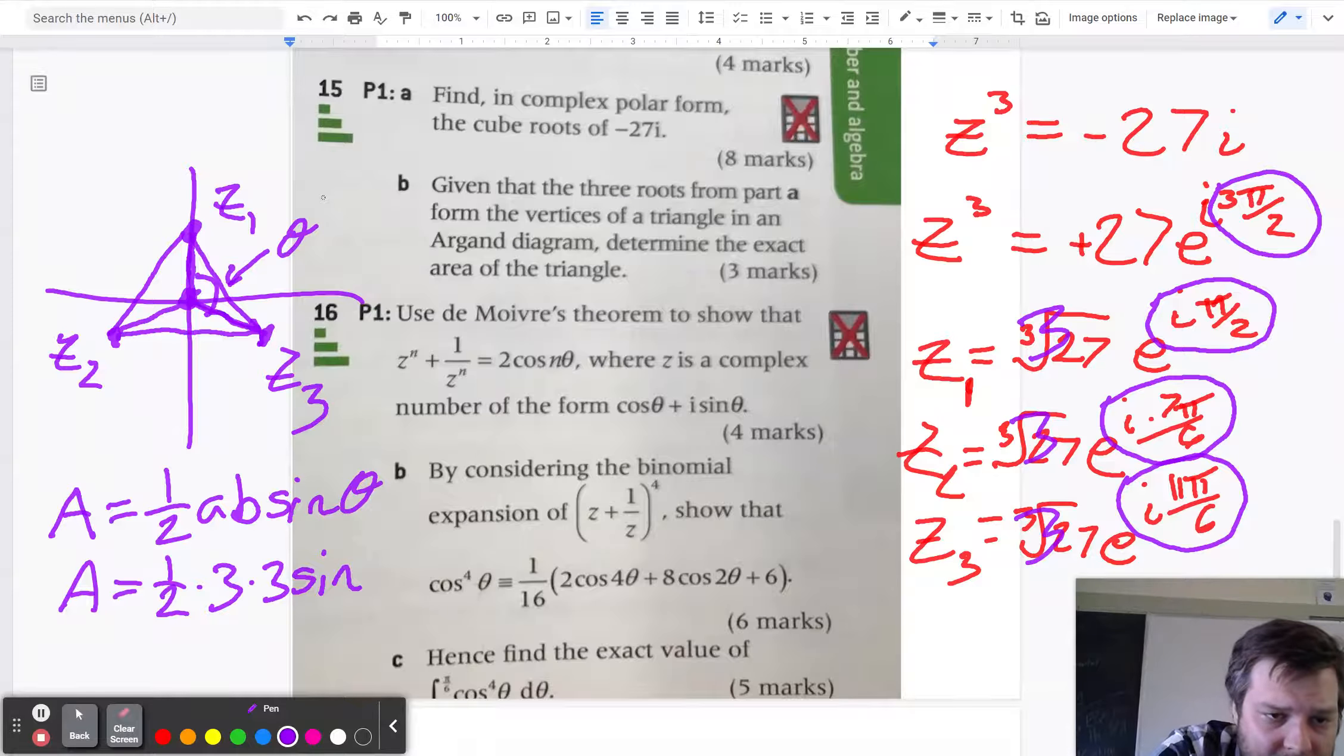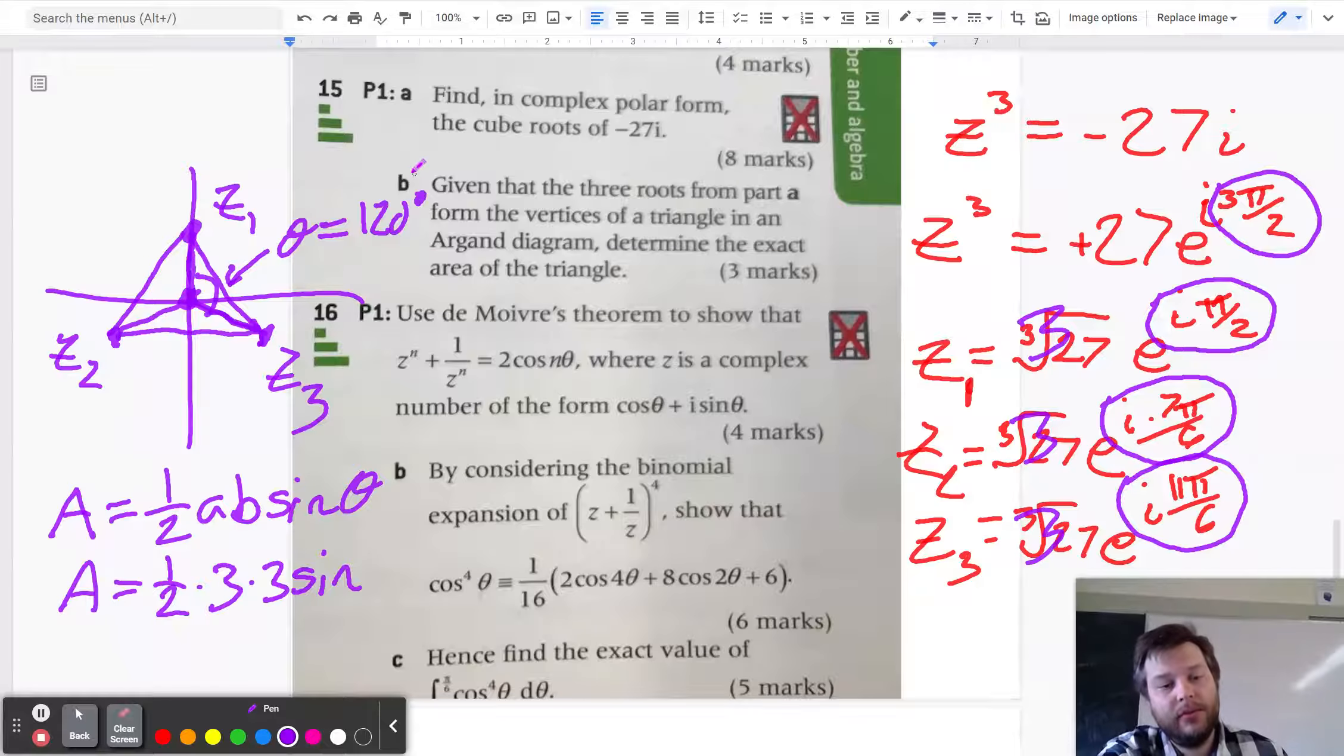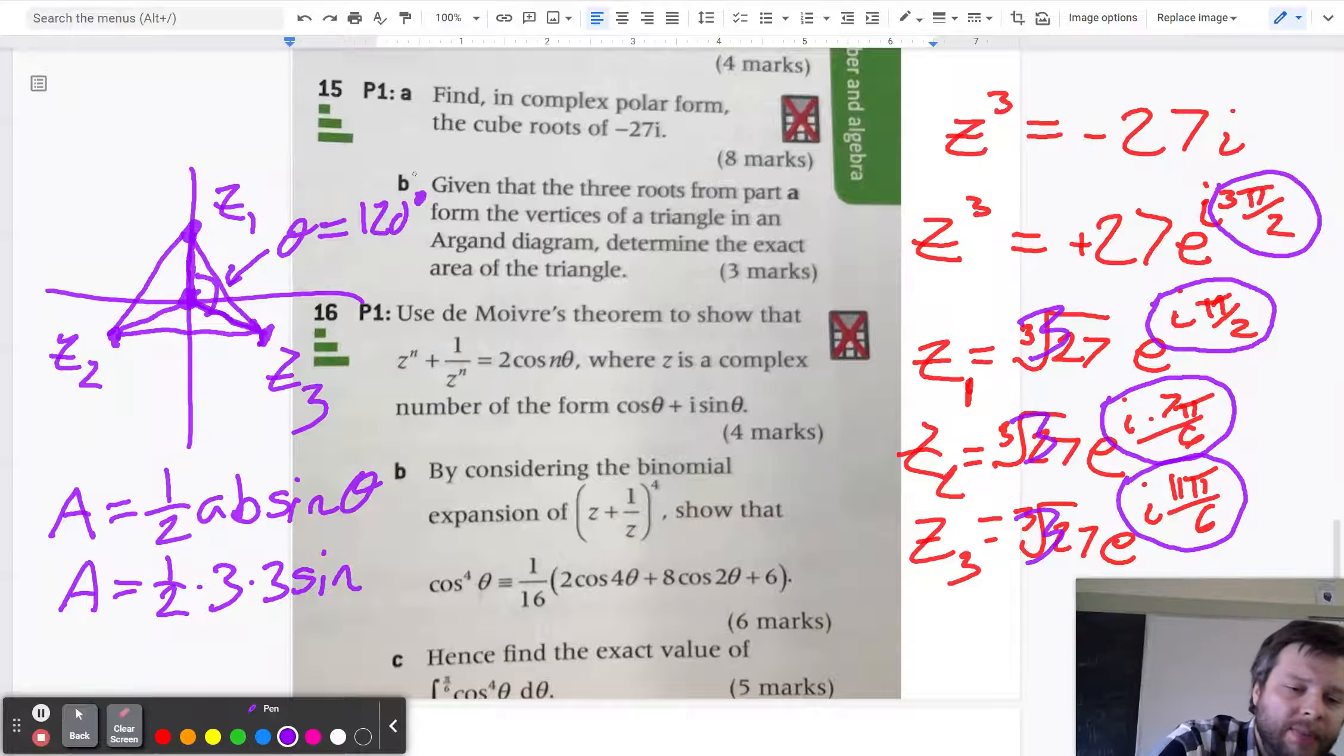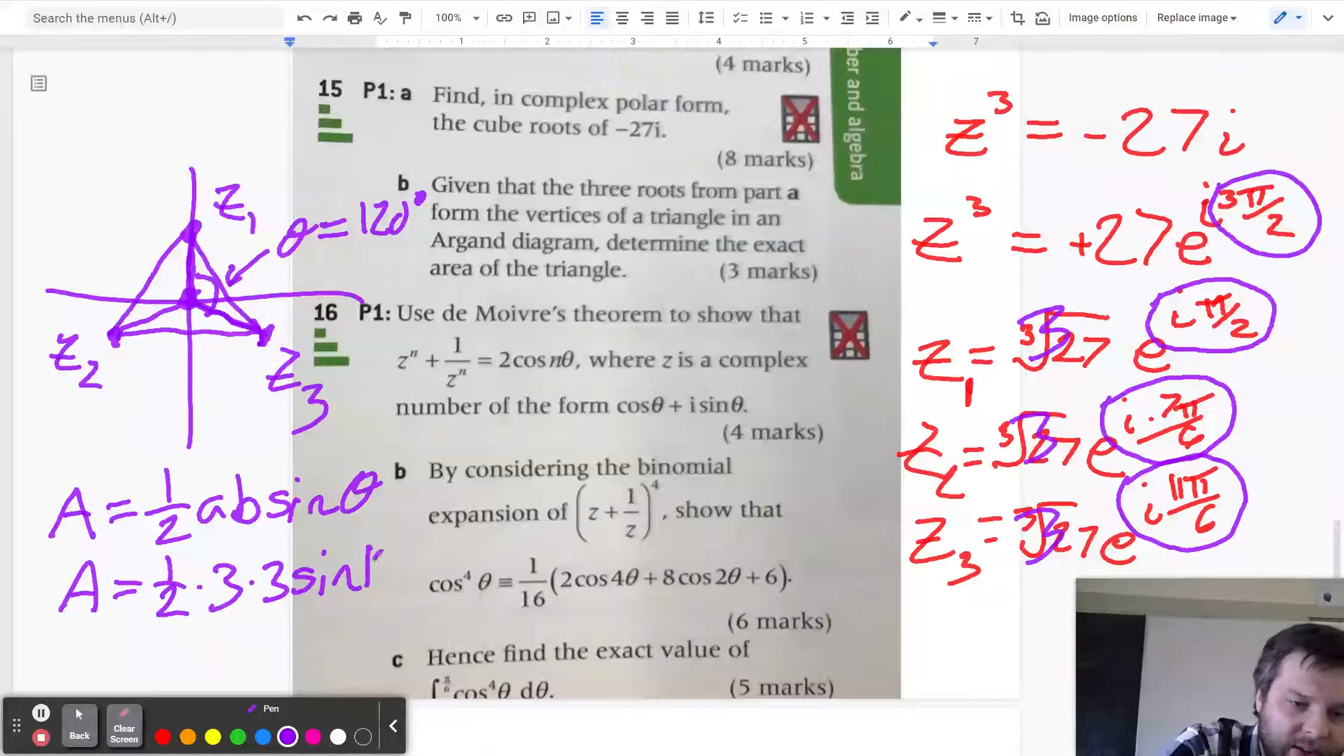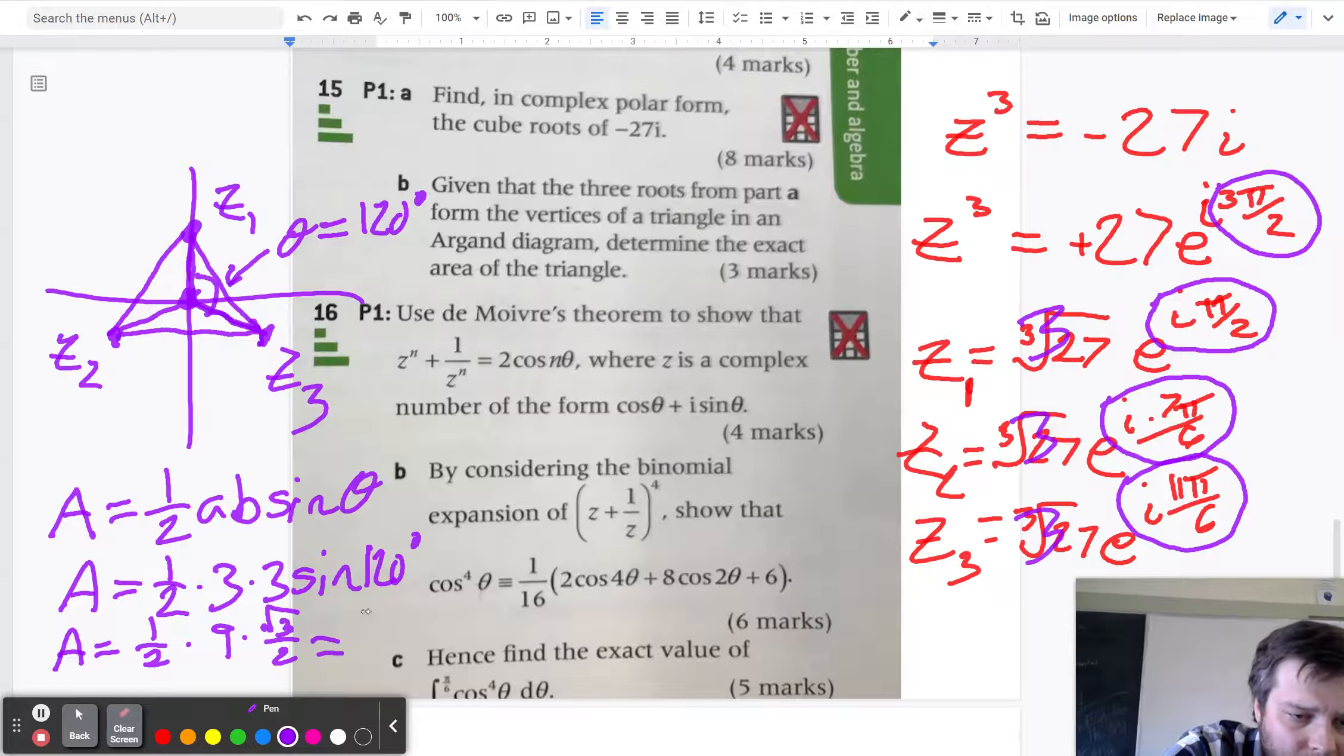And that theta, you can find it a couple different ways, but it is just 30 degrees more than 90. So that theta is 120 degrees. And if you look at the sine of 120 degrees, the sine of 120 degrees is square root 3 over 2. And so sine of 120 degrees, we can say the area of one of those triangles is going to be 1 half times 9 times square root of 3 over 2. So I guess we get 9 root 3 over 4.